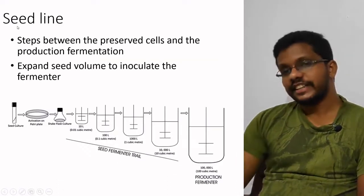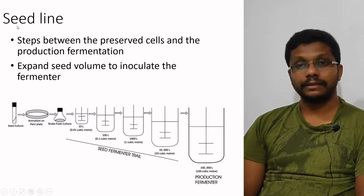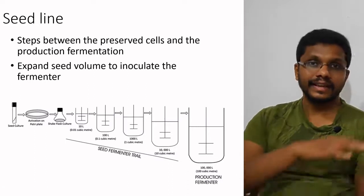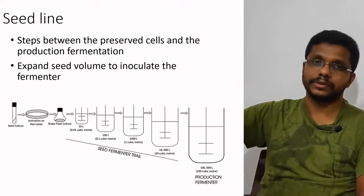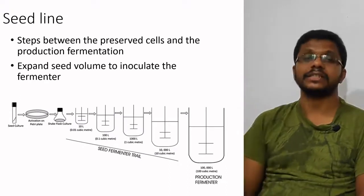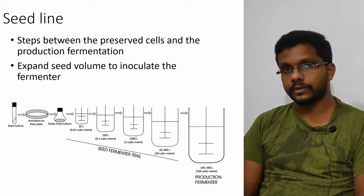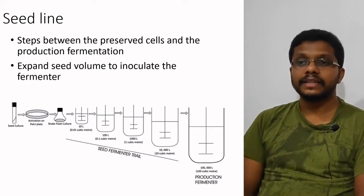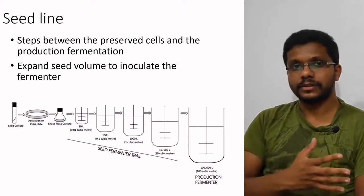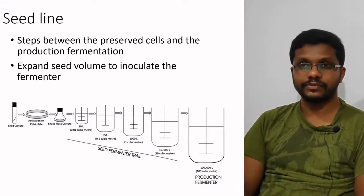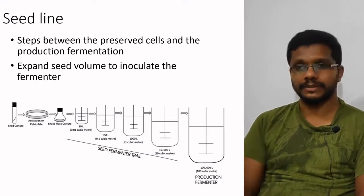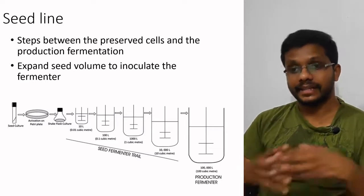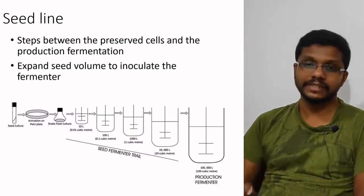In industry, the inoculum development process is undertaken in a seed line. The seed line is the step-by-step set of processes used for inoculum development or seed culture. It represents the steps between the preserved cell — stored in liquid nitrogen or lyophilized form — and the production fermentation. Step by step we expand the seed volume to inoculate the fermenter.